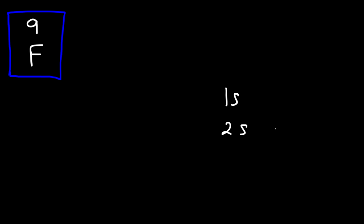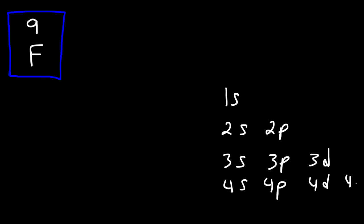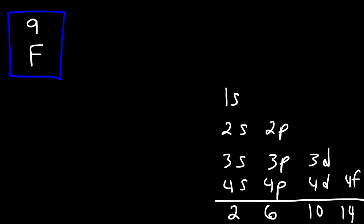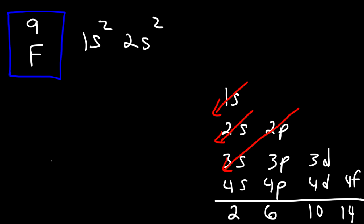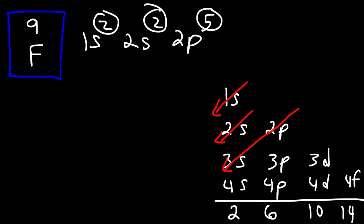I'm going to create a chart that will be helpful here. The S sublevel can hold a maximum of 2 electrons, P can hold up to 6, D can hold up to 10, and F can hold up to 14. We need to write the electron configuration so that the exponents add up to 9. We start with 1S2, then 2S2, and then the 2P sublevel which can hold up to 6 — but we only need 5, because 2 plus 2 plus 5 is 9.